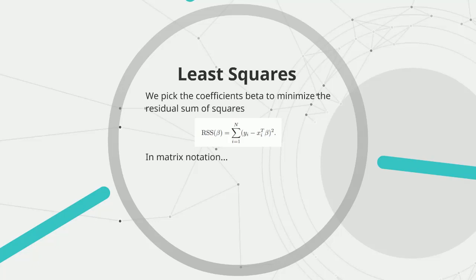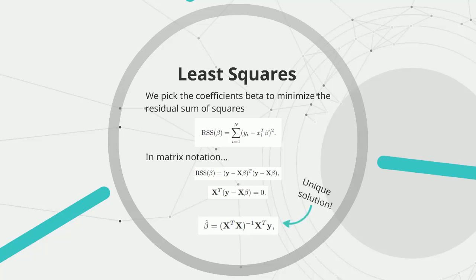The solution is easiest to characterize in matrix notation. Here x is an n-by-p matrix with each row an input vector, and y is an n-vector of the outputs in the training set. Differentiating with respect to β, we get the normal equations. These solutions allow us to solve for β given the outputs of our training examples. You'll more often see β written in matrix notation because it's easier to characterize and solve. Let's take a look at an actual example of using least squares.